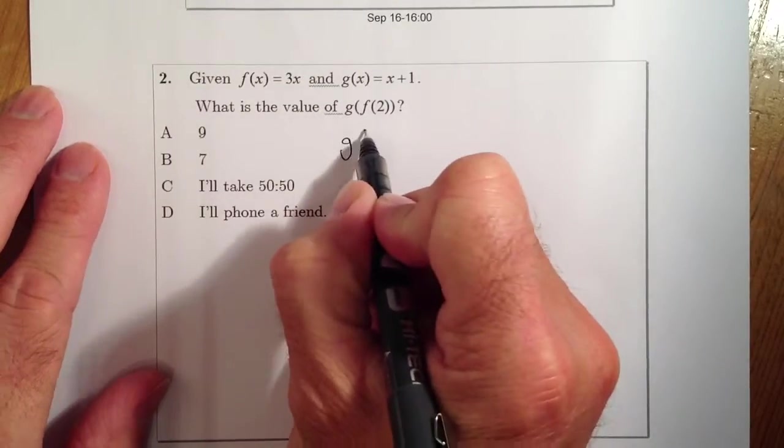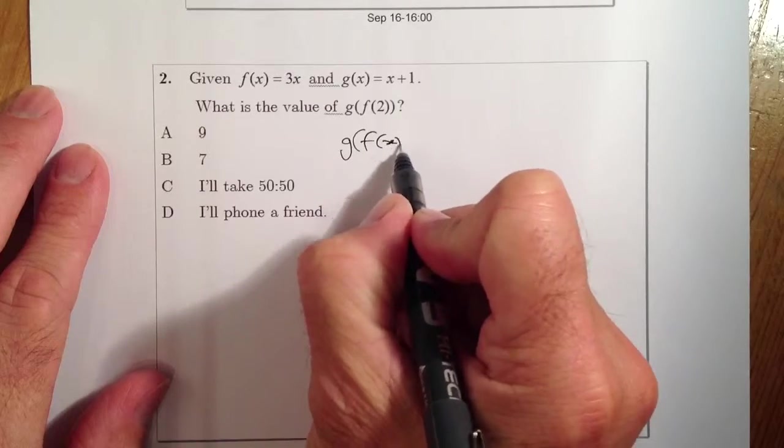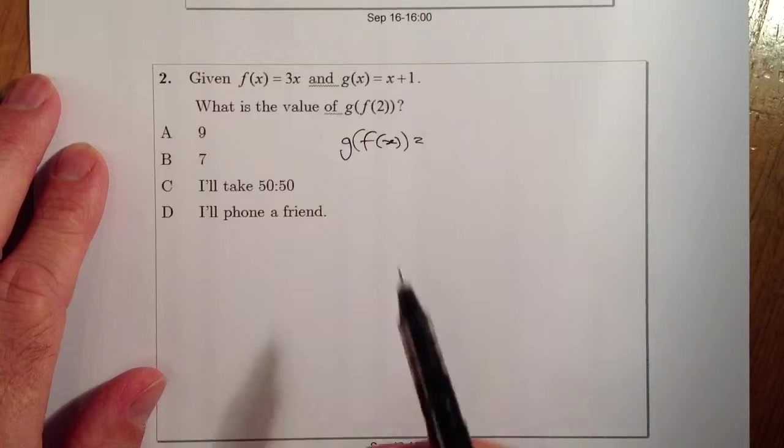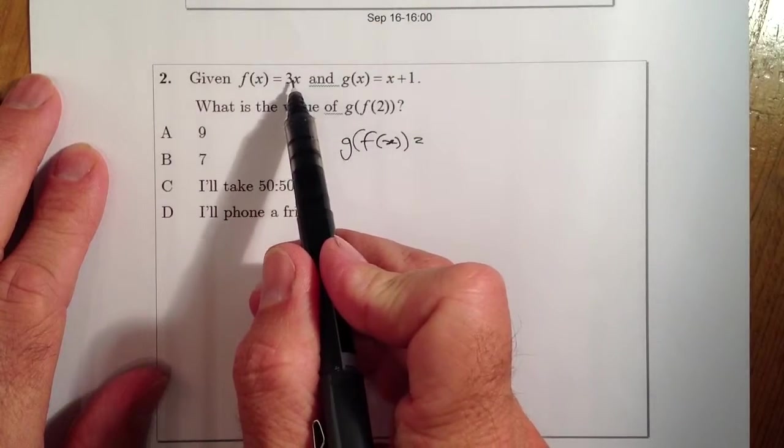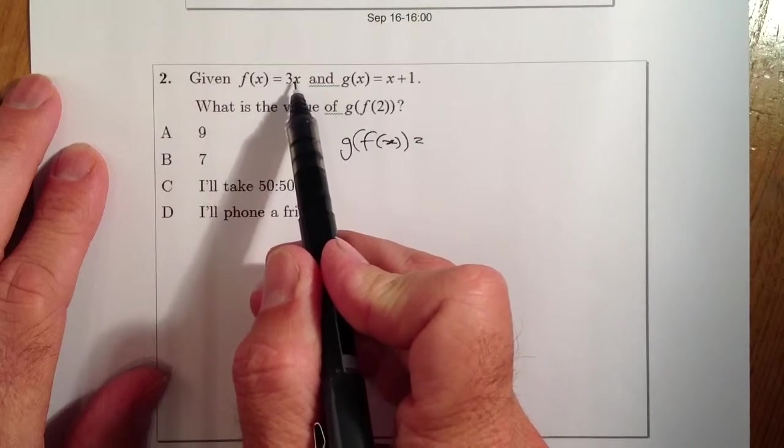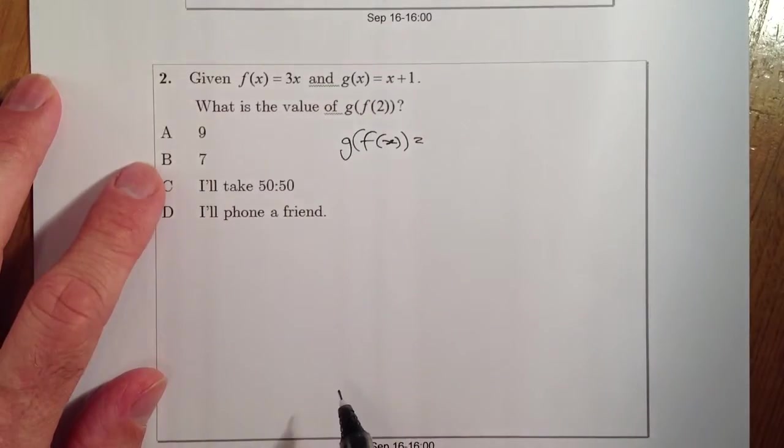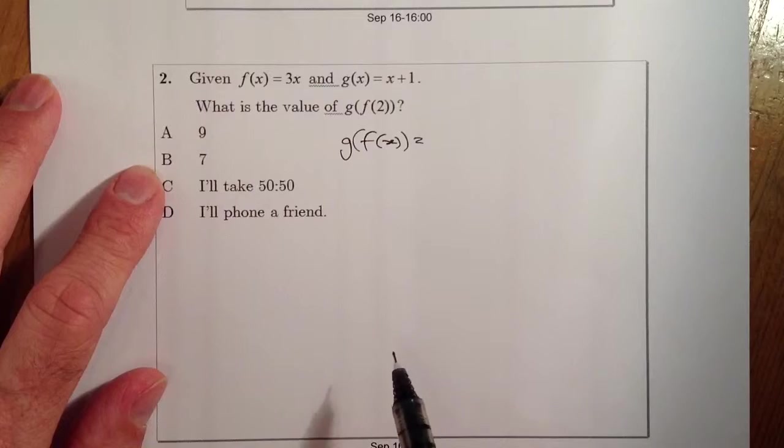So first thing I'm going to do is I'm going to find out a g of f of x function. You don't need to do this, we could substitute a 2 in there, which would give me 3 times 2 would be 6, and then what I'll do is I'll put the 6 in there and that would give me 7. So I would get the answer of B coming out of that one there.